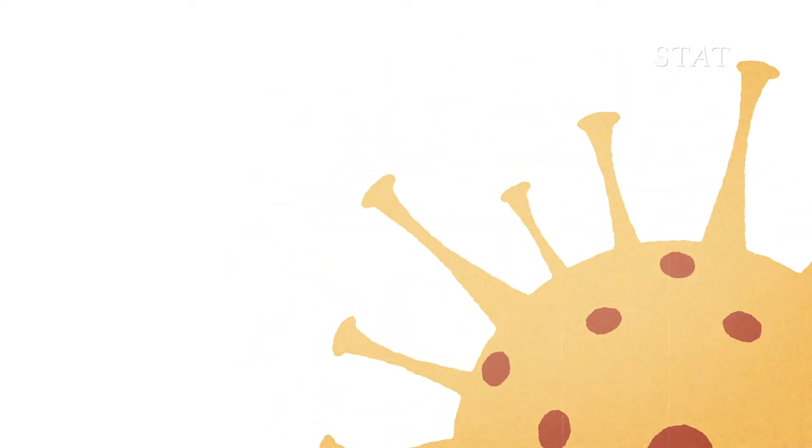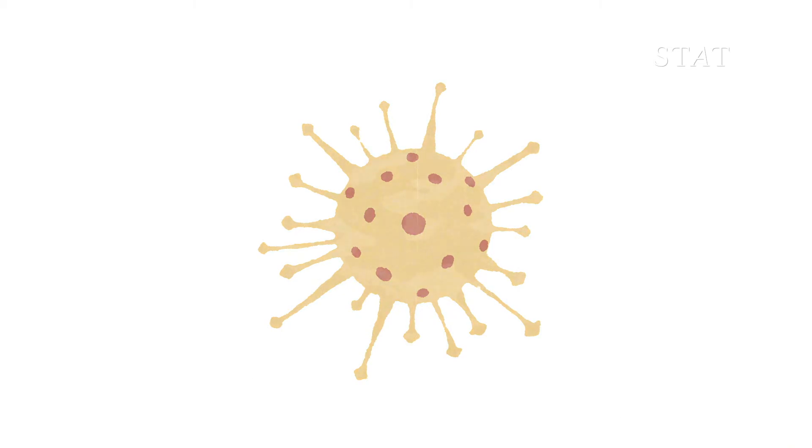A change in the virus's spike protein could make it better at entering cells. Or it could change the appearance of the virus, so that antibodies from prior infection or vaccination might not recognize it, which could leave the immune system unprepared.